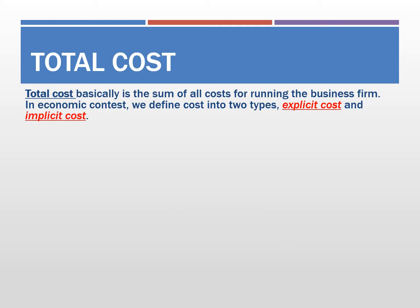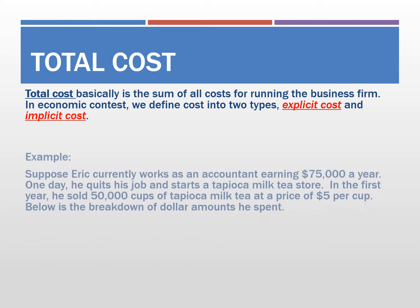In the study of profits, we also want to identify what we mean by explicit costs and implicit costs. This is especially important in the context of economics. When we talk about profits in economics, we actually include both implicit costs and explicit costs for running a business. However, in accounting calculations, we typically do not include the implicit costs of the firm's business.